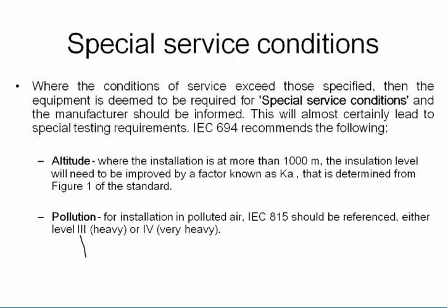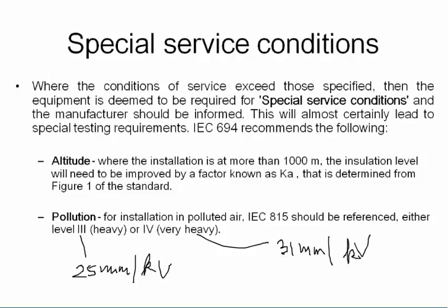What are these pollution values? Level 3 — the pollution performance is 25 millimeters per kilovolt. Very heavy (level 4) would be 31 millimeters per kilovolt. Level 2 would be simply 20 millimeters per kilovolt — much lower. So in polluted areas you might specify insulation with a higher creepage in terms of millimeters per kilovolt — that's insulation performance.